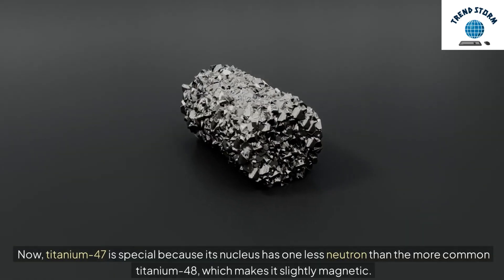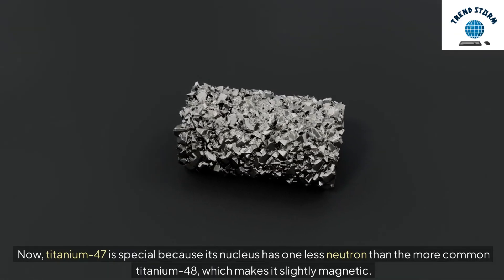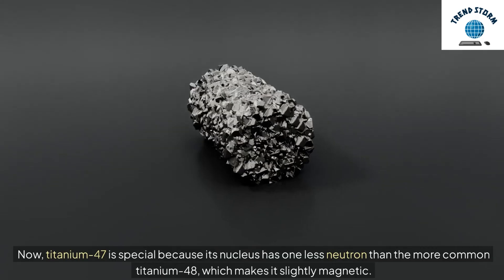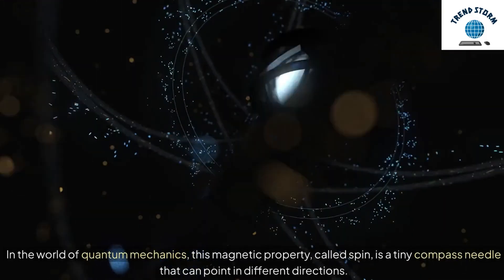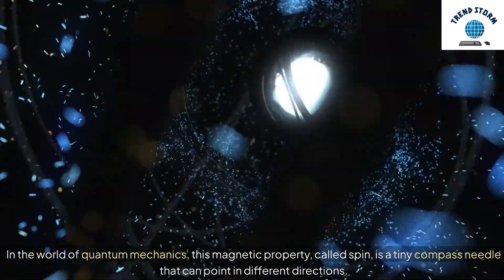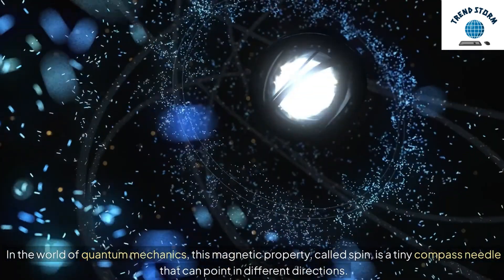Now, titanium-47 is special because its nucleus has one less neutron than the more common titanium-48, which makes it slightly magnetic. In the world of quantum mechanics, this magnetic property, called spin, is a tiny compass needle that can point in different directions.